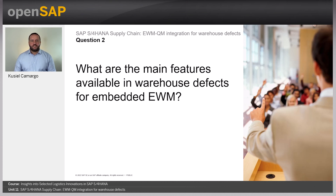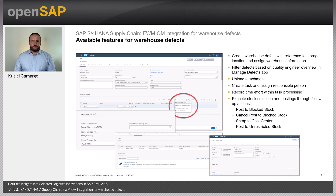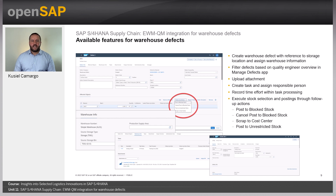What are the main features available in warehouse defects for embedded EWM? It all starts with the new app called Record Warehouse Defect, to record the defective stock found in the warehouse. With this app, we can create a warehouse defect with reference to a storage location and assign warehouse information. In the Manage Defects app, we can filter defects based on quality engineer overview. Back in the warehouse defect, we can upload an attachment, create a task and assign a responsible person, record time effort within task processing, execute stock selection and postings through the follow-up actions: post to block a stock, cancel post to block a stock, scrap to cost center, and post to unrestricted stock.